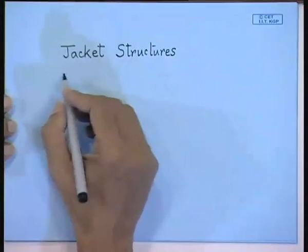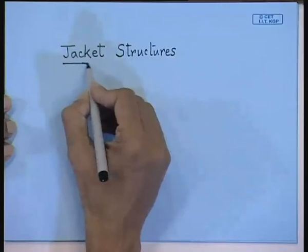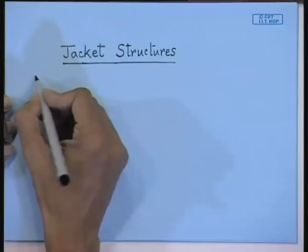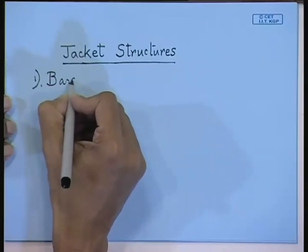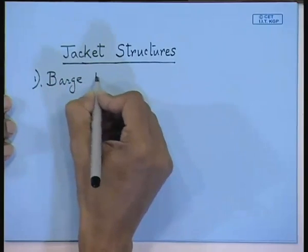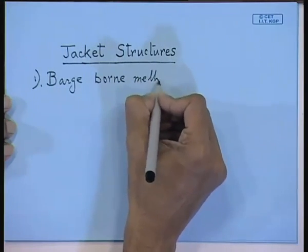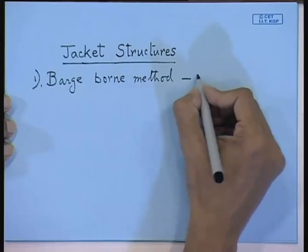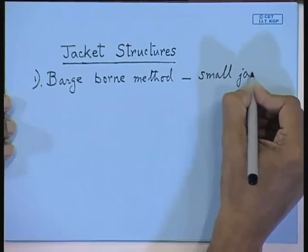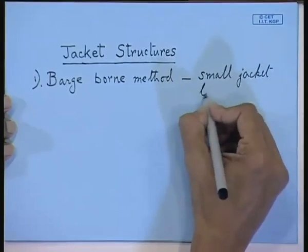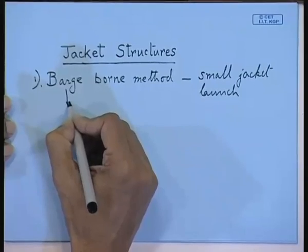We are starting with the jacket structures. In the previous class, I was discussing the two types of launch methods that are normally used. One is the barge bone method. The barge bone method is normally used for launching small jackets. This is actually used for small jackets, and it uses a dedicated barge.